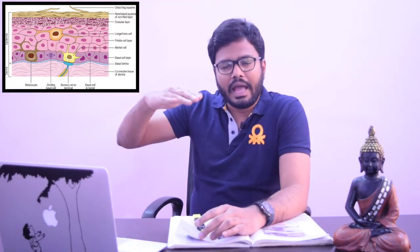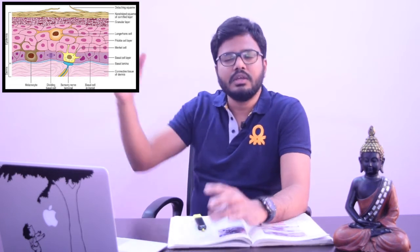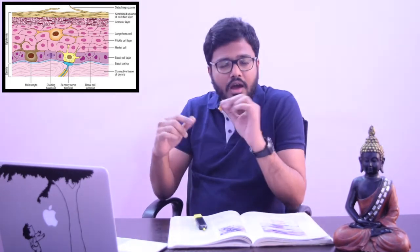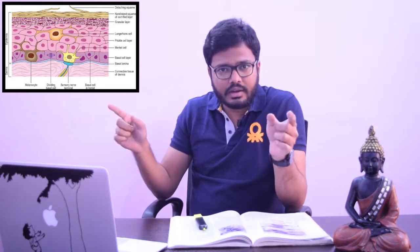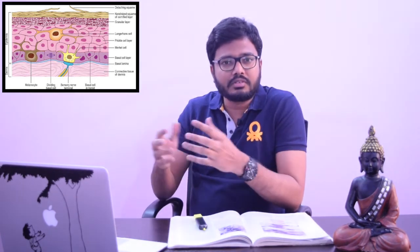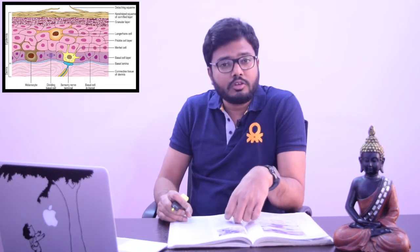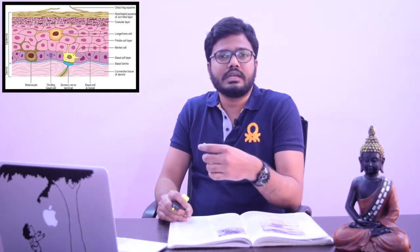Keratinocytes increase in volume with each successive layer. However, there is an exception when comparing cells of stratum basale to cells of stratum granulosum. As we move towards the granulosum, cell volume increases and they cover a wider surface area. However, cells of the cornified layer are smaller in dimensions compared to the subjacent layer. The cells of each successive layer also cover a larger area than the cells immediately below.